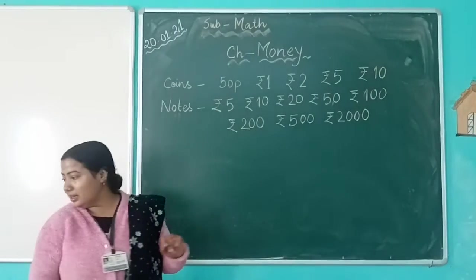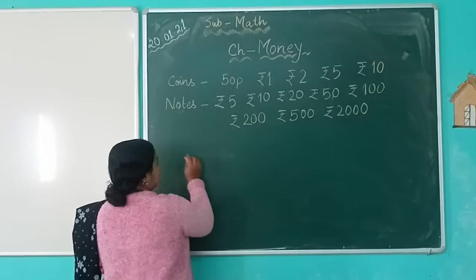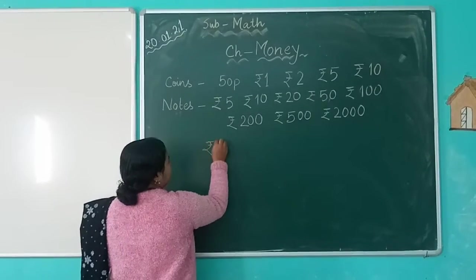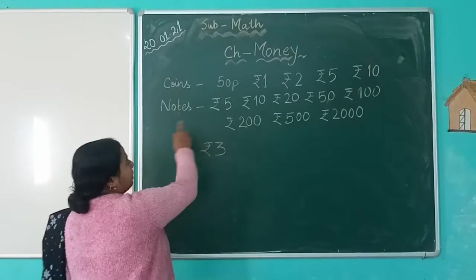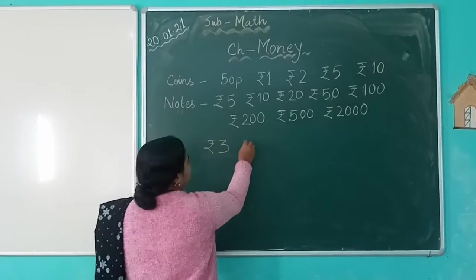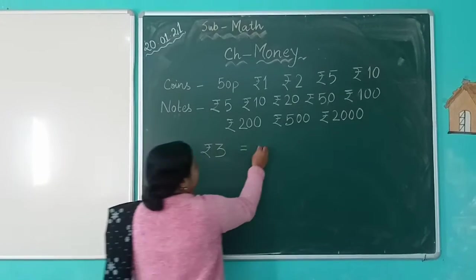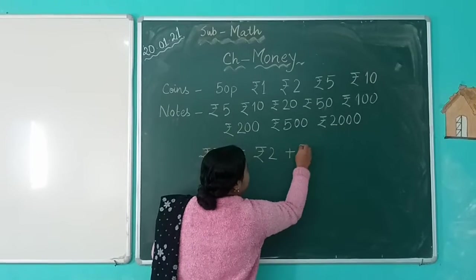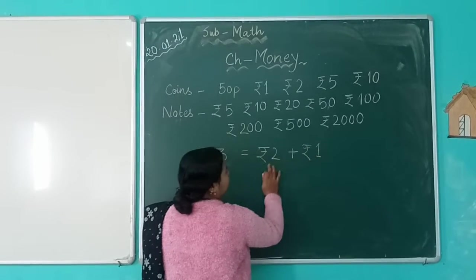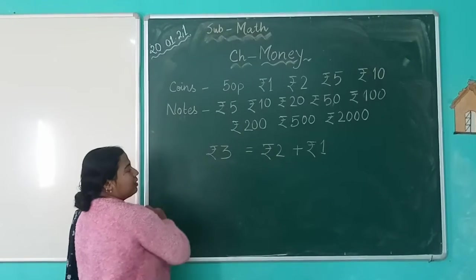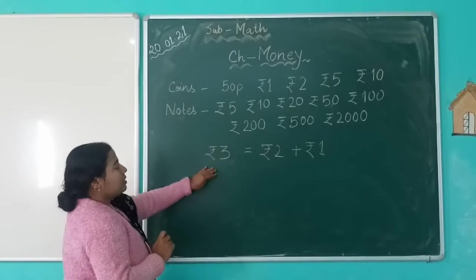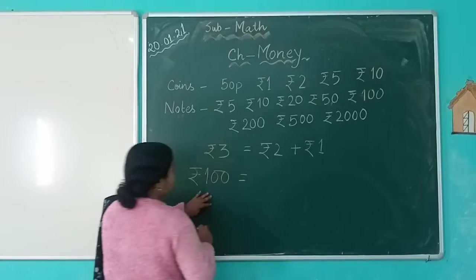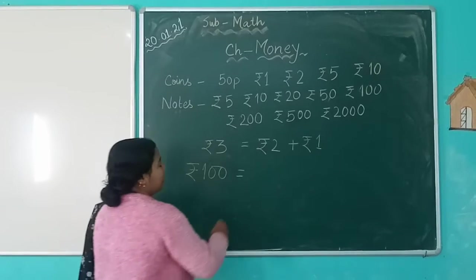Now consider an example. How will we make rupees 3? We can use rupees 1 plus rupees 1 plus rupees 1. How else can we make different amounts?